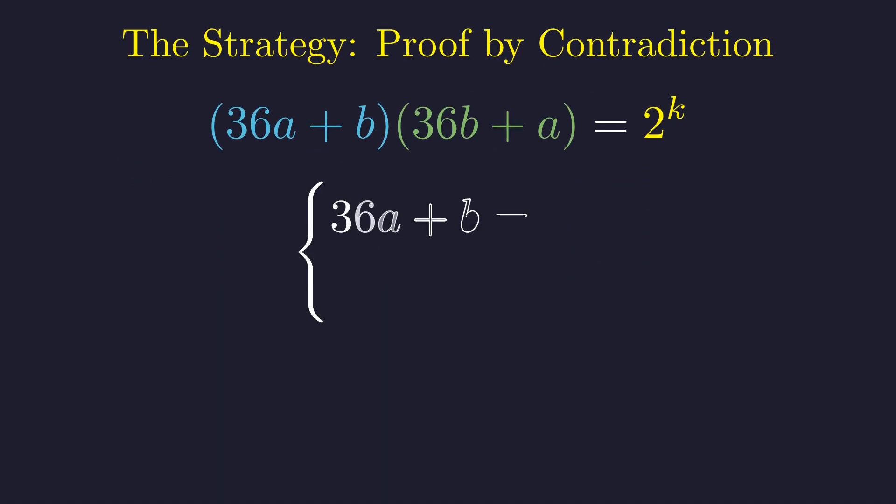This implies that 36a + b must equal 2^m, and 36b + a must equal 2^n, for some integers m and n, where m + n = k.